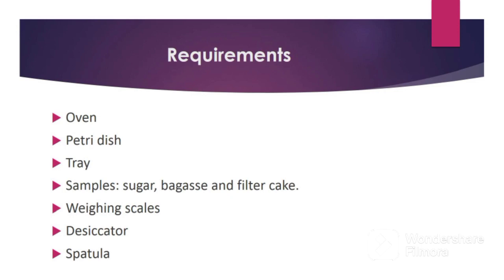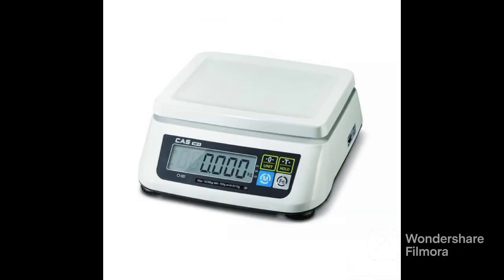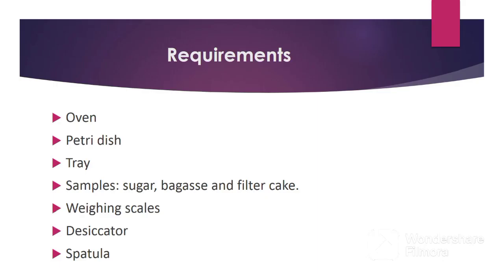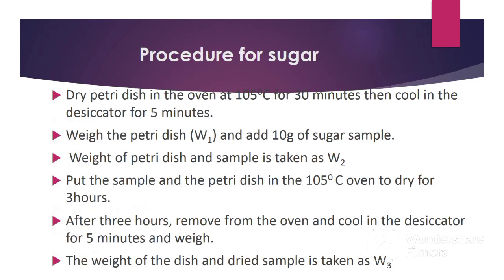The next sample is bagasse. Bagasse is the fibrous residue leaving the last mill after juice extraction. Bagasse is a byproduct used as fuel in the boiler to generate electricity, so the bagasse should not be too wet or too dry. The next sample is filter cake, which is the residue that remains on the vacuum filter at the juice treatment section after removing filtered juice. It is a byproduct used as mulch manure in the farms. It is also important to determine the moisture content of filter cake so the operator knows if enough water is being applied to the mud on the vacuum filter. Next we have a weighing scale, a desiccator — whose function is to cool the petri dish and sugar sample after drying — and finally a spatula.